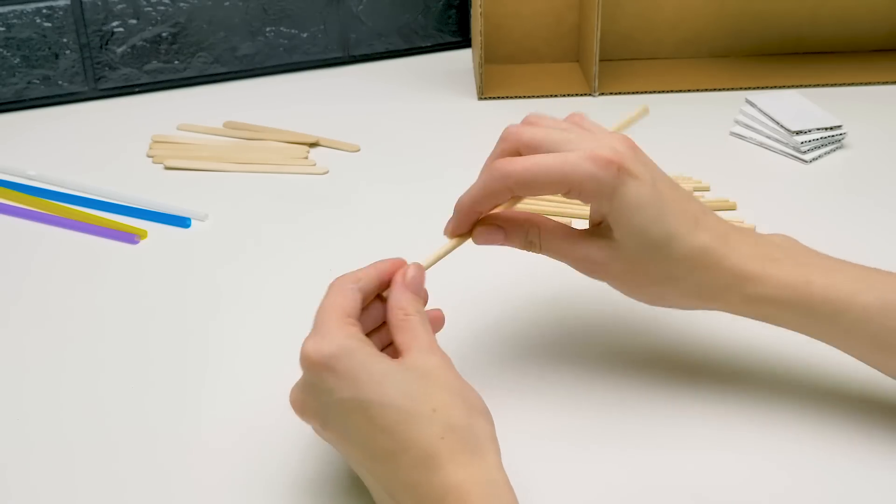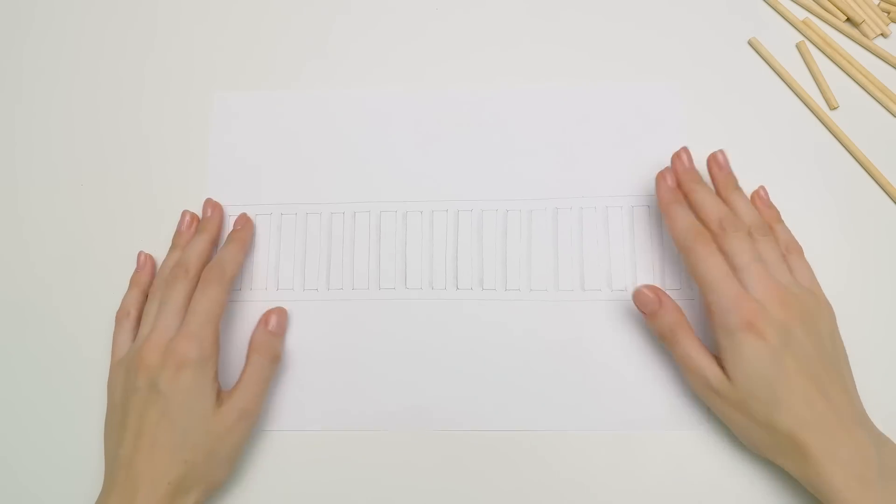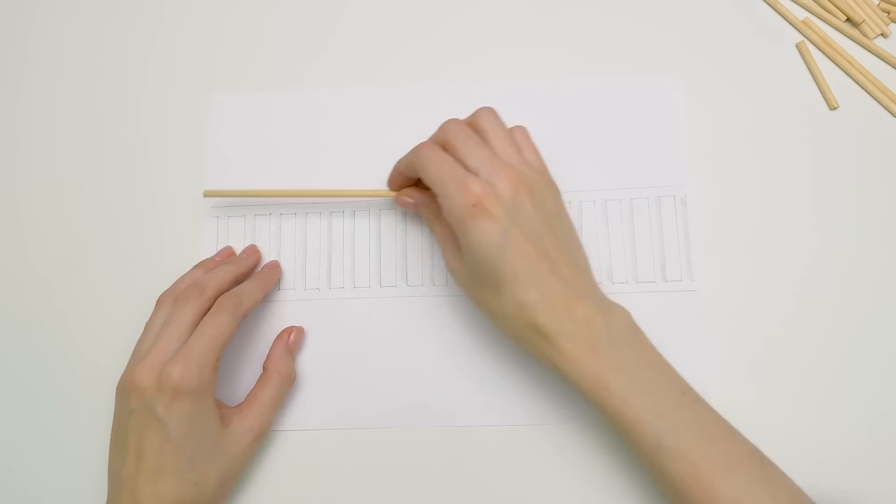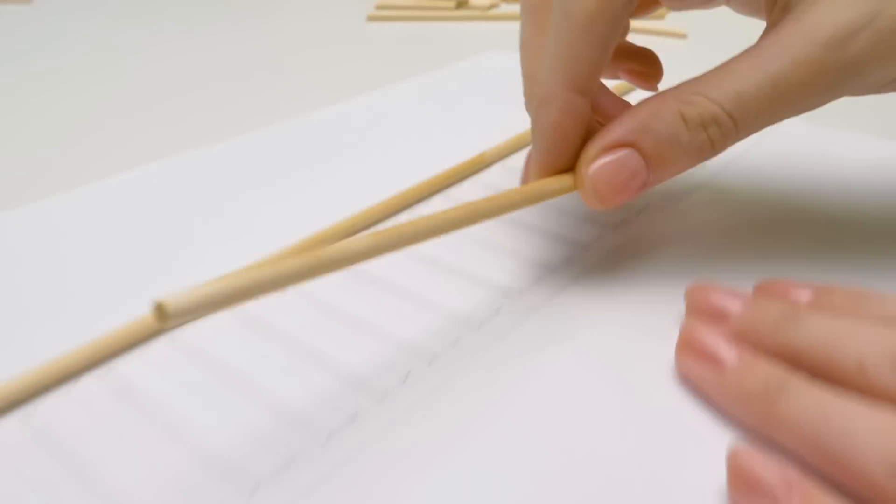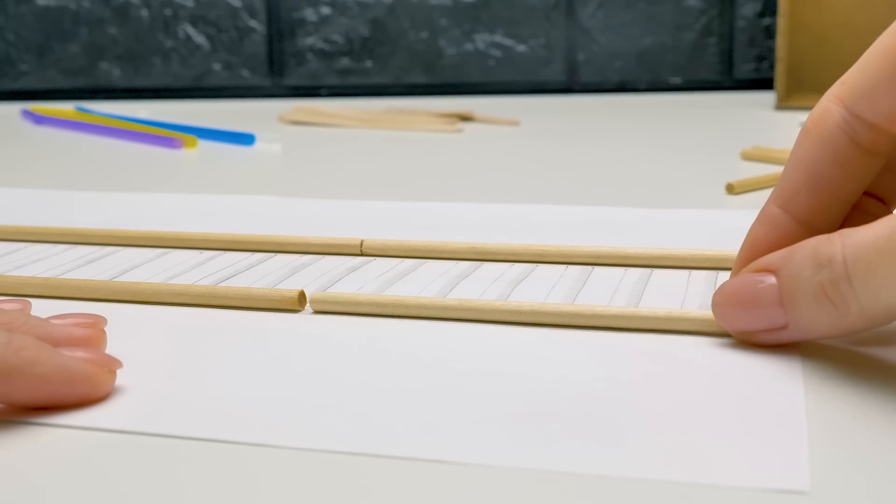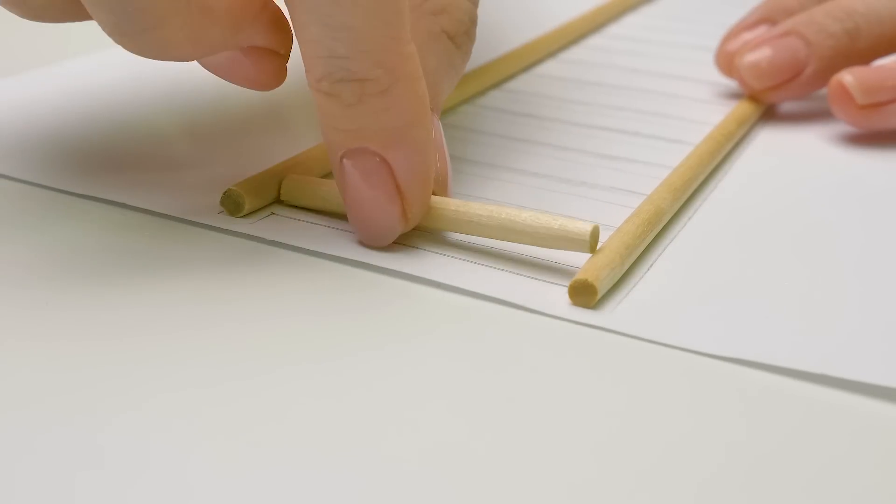And I'll start with making a ladder out of wooden skewers. Here, I have a template to guide me. I'll place the long sticks on the sides. One side... and the other one... neatly. And I'll glue small sticks over them.